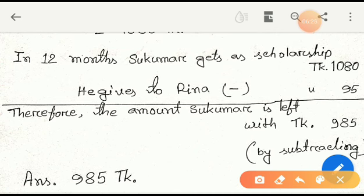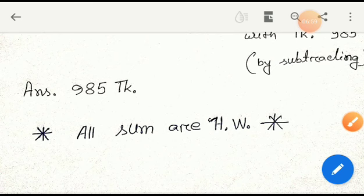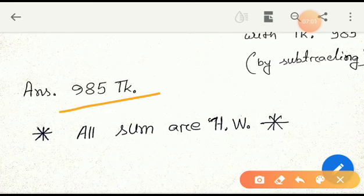He gave to Rina 95 taka. Therefore, the amount Shukumar is left with is 985. Which method do we apply? By subtraction, by subtracting, we have to find out. The total amount is 985 taka. Okay, dear student.